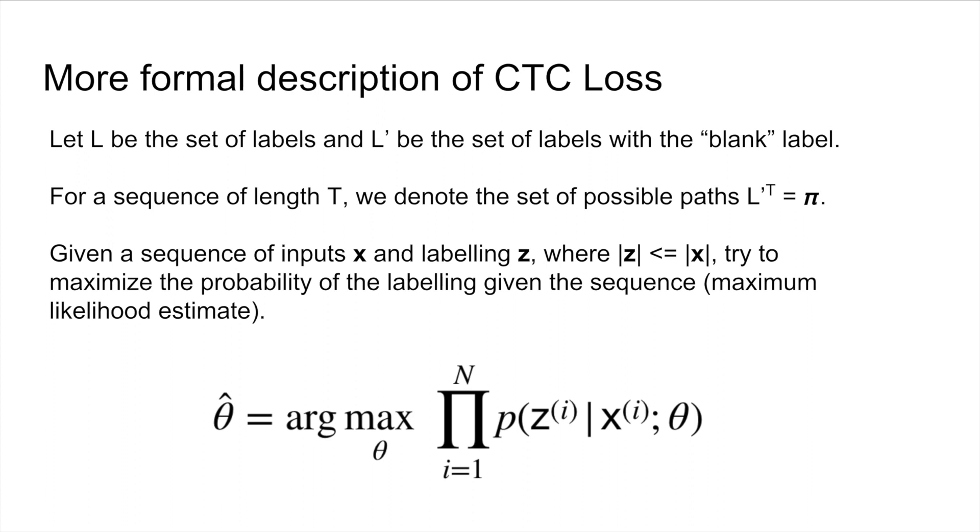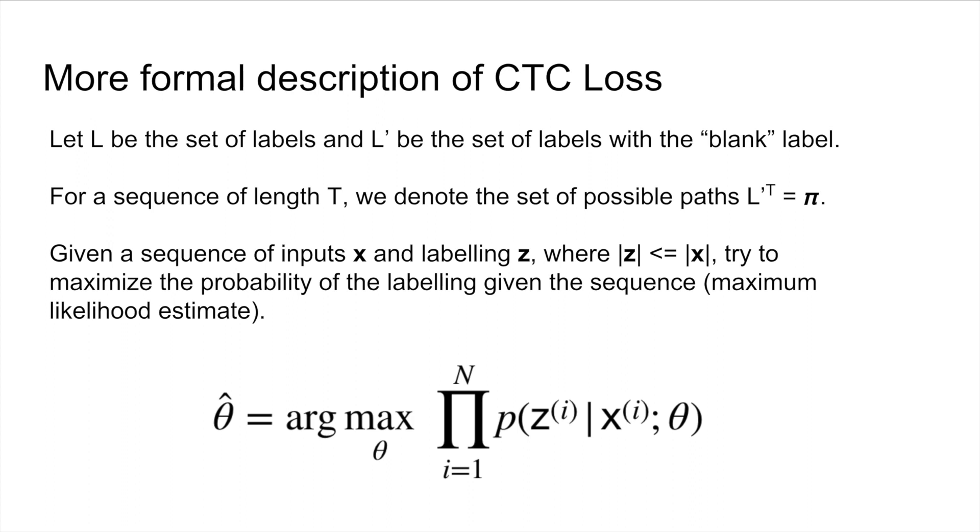So given a sequence of inputs, x of i, and a labeling, z of i, where we constrain the size of the labeling to be less than the size of the input, and we assume that the size of the input is the same as the output sequence. So denote the probability of a given labeling as p of z given the input and some parameters. And these parameters are going to be our recurrent neural network. And we're going to do the maximum likelihood estimate of all of the probabilities over all the labelings in our dataset.